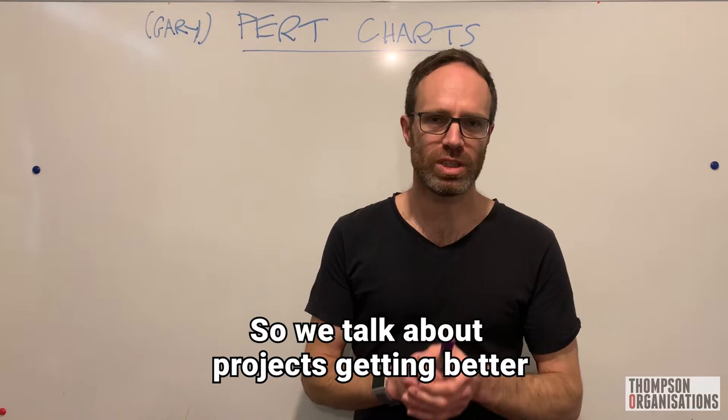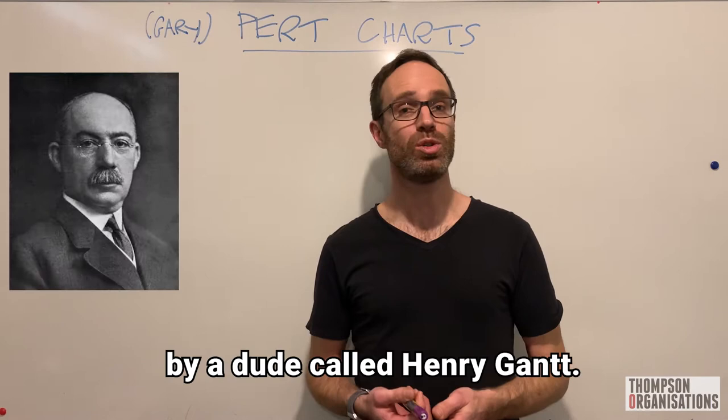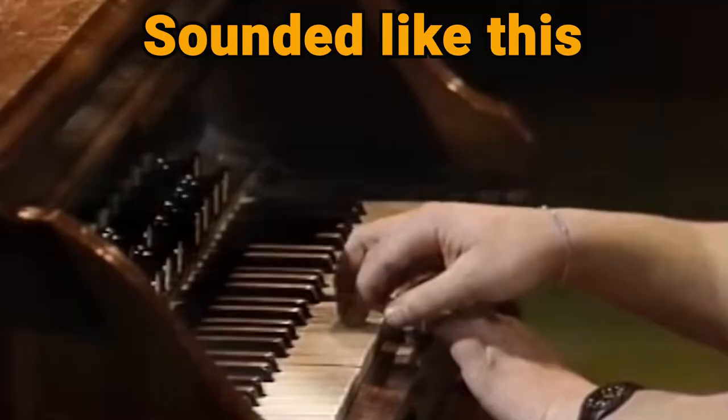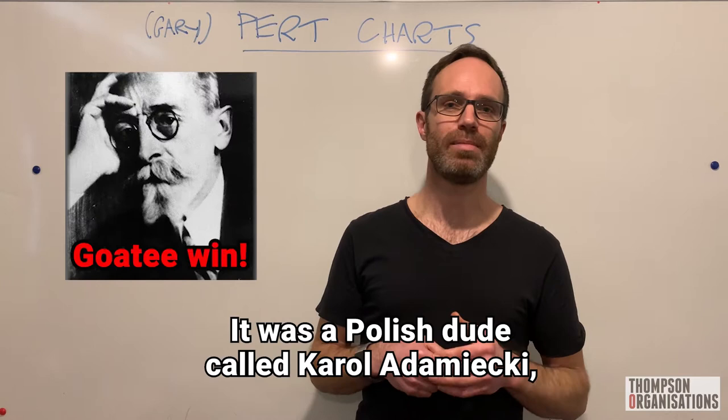So we talk about projects getting better, and out comes the Gantt chart. Now Gantt charts were actually put together by a dude called Henry Gantt, which was used by the US Army in World War I. There was a guy before Gantt, he called them harmonograms. It was a Polish dude called Karl Adamecki, but he was a bit late to the draw, so they're called Gantt charts to this day.